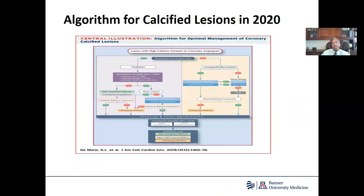This is my treatment algorithm that I think is worth paying attention to. The bottom line is you want to have an optimal stent outcome, for which you need optimal balloon expansion. In circumstances where the balloon crosses the lesion after you've crossed with a wire, pre-dilation with a small balloon followed by imaging is the right way to go. If imaging demonstrates significant calcium — defined as an arc greater than 180 degrees, length greater than 5 millimeters, or thickness greater than 0.5 millimeters — then some form of plaque modification is typically needed.